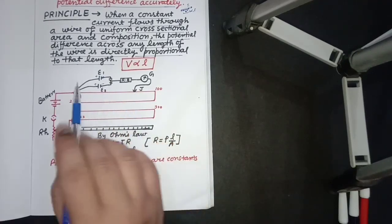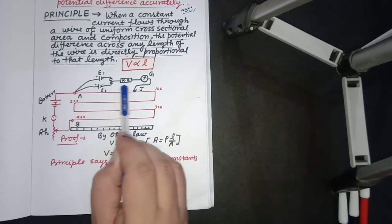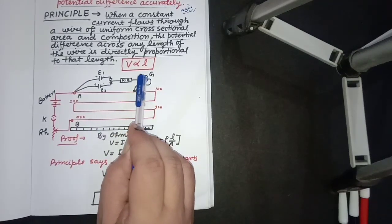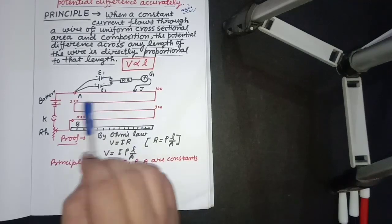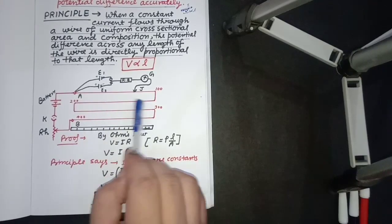We slide the jockey, and when there is no deflection in the galvanometer, that position is known as the balancing length.